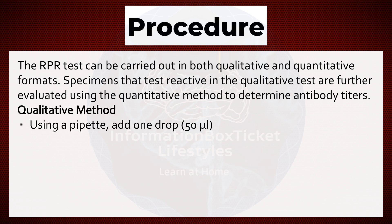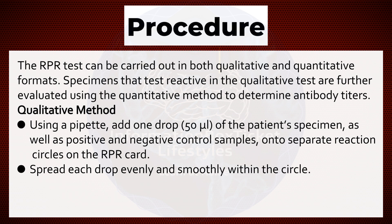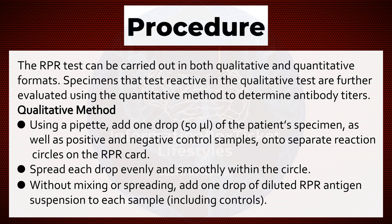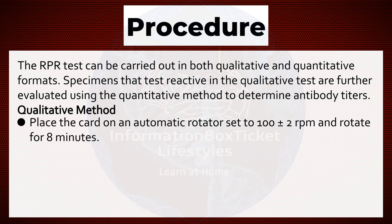Qualitative method: Using a pipette, add one drop (50 microliters) of the patient's specimen, as well as positive and negative control samples, onto separate reaction circles on the RPR card. Spread each drop evenly and smoothly within the circle. Without mixing or spreading, add one drop of diluted RPR antigen suspension to each sample, including controls. Place the card on an automatic rotator set to 100 ± 2 revolutions per minute.